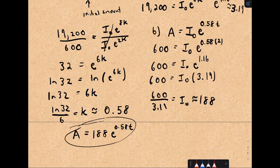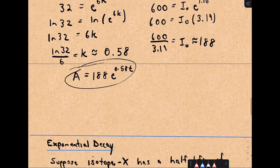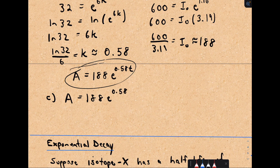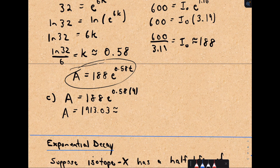What's the number of bacteria after 4 hours? We take our model and replace t with 4: A(4) = 188·e^(0.58 × 4) = 188·e^(2.32). That gives approximately 1,913 bacteria after four hours.